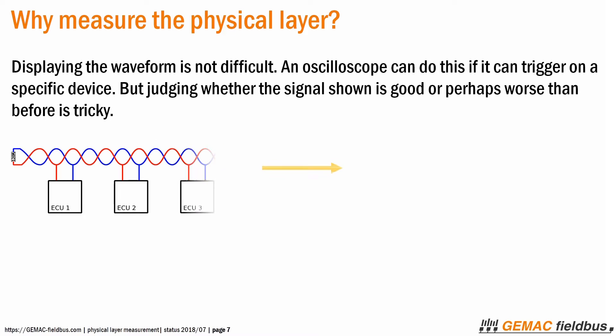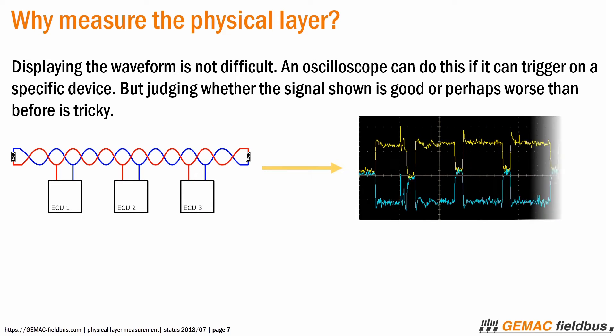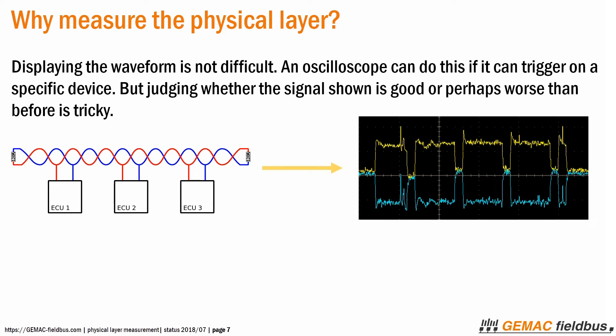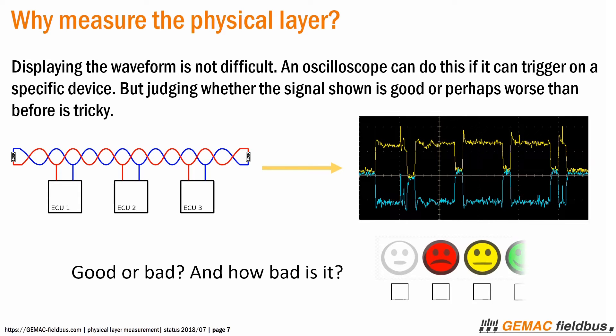Displaying the waveform is not difficult. An oscilloscope can do this if it can trigger on a specific device. But judging whether the signal shown is good or perhaps worse than before is tricky.